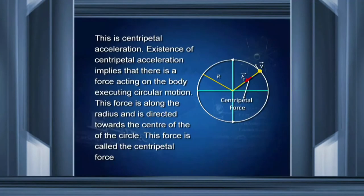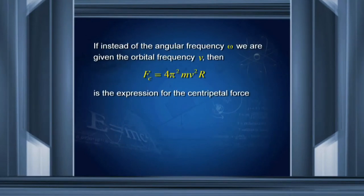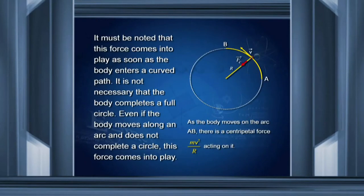If there is acceleration, there must be a force. This centripetal acceleration is along the direction toward the center of the circle, and therefore the force is also along the line joining the object with the center. If m is the mass, then the centripetal force is mV²/R, or in terms of angular frequency, mω²R, or in terms of frequency, 4π²mν²R. It must be noted that this force comes into play as soon as a body enters a curved path — it is not necessary that the body complete a full circle.